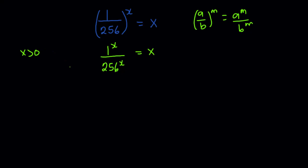Now for all values of x greater than zero, 1^x is equal to 1. So this simplifies to 1/256^x = x.